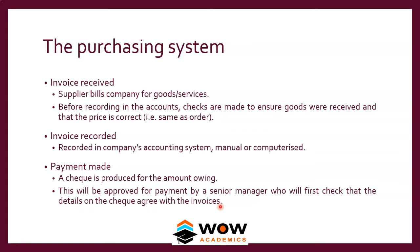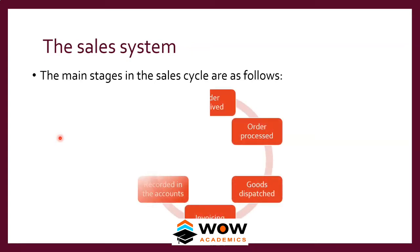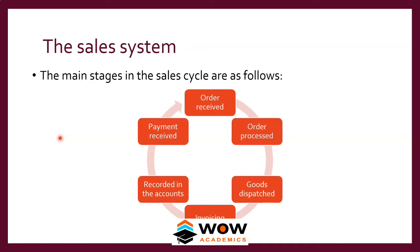Payment is approved by a senior manager who first checks that the details on the check agree with the invoice — the supplier's name on the check must match the invoice, and the amounts must also match. Once all details match, the manager signs and the check is sent to the supplier. That completes the purchasing system.